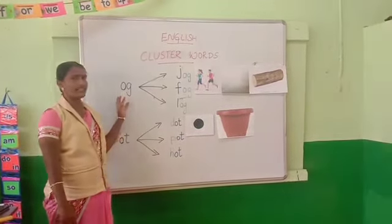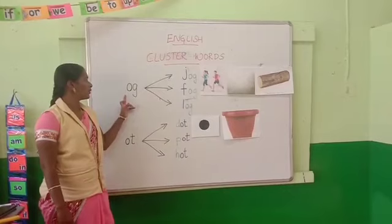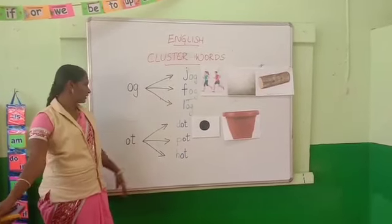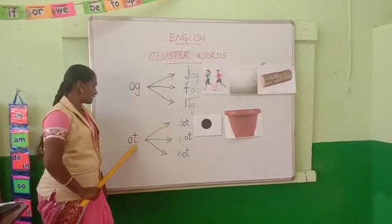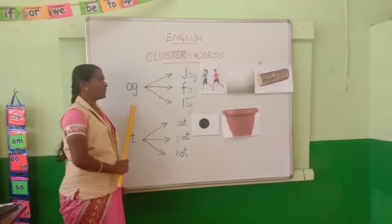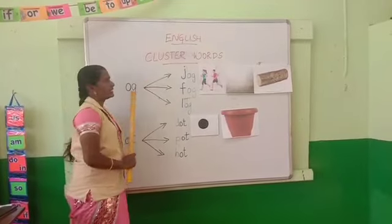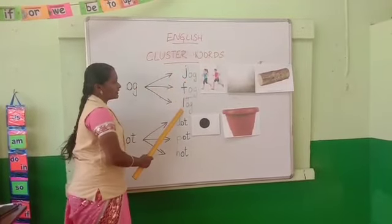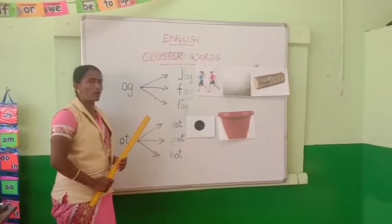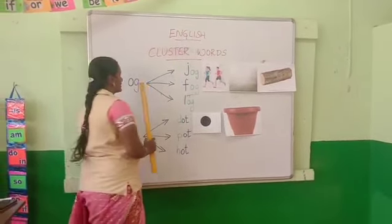See, children, are you ready? Rhyming words means the ending of the word gives the same sound. See — OGR, OTR.